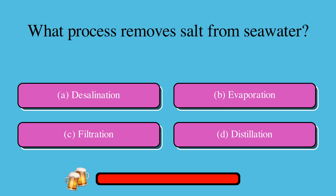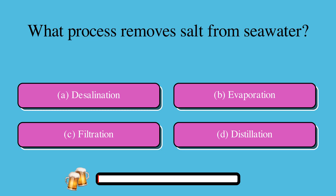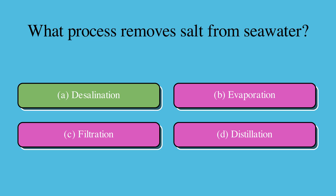What process removes salt from seawater? A. Desalination, B. Evaporation, C. Filtration, or D. Distillation? The correct answer is A. Desalination.